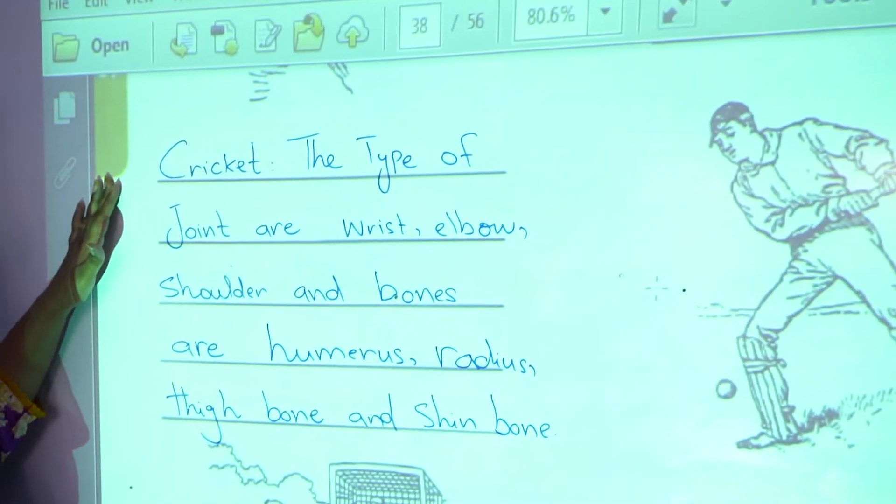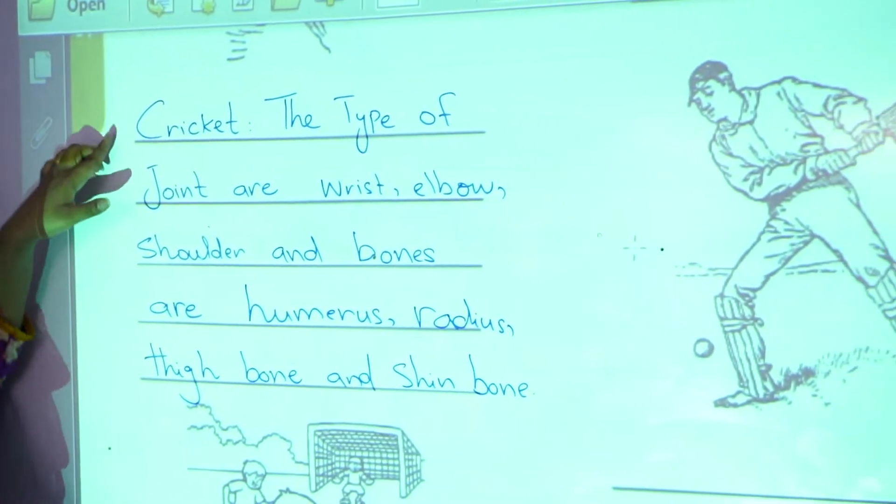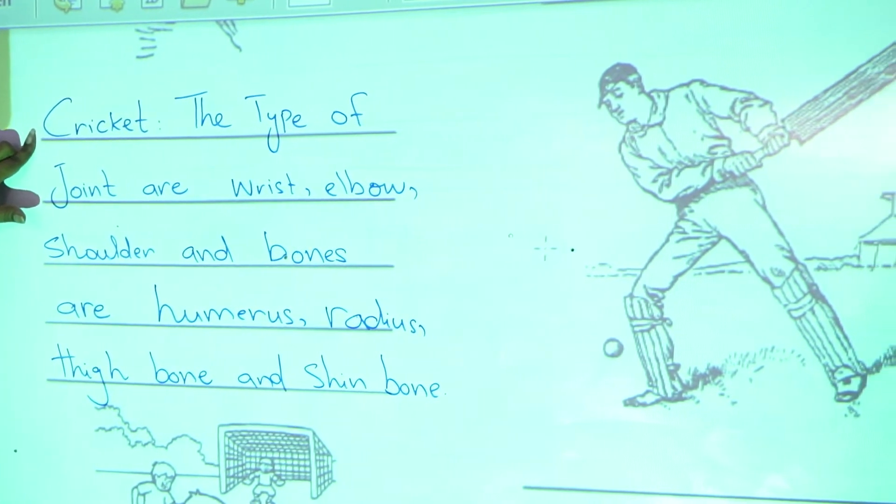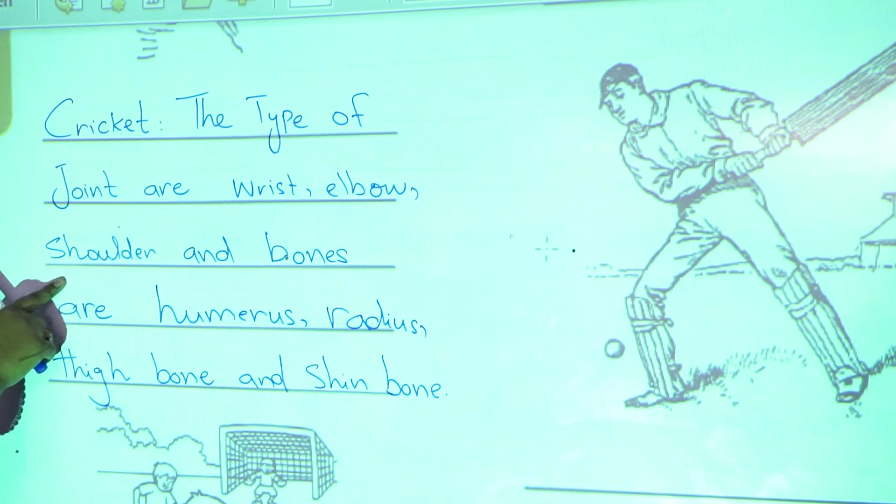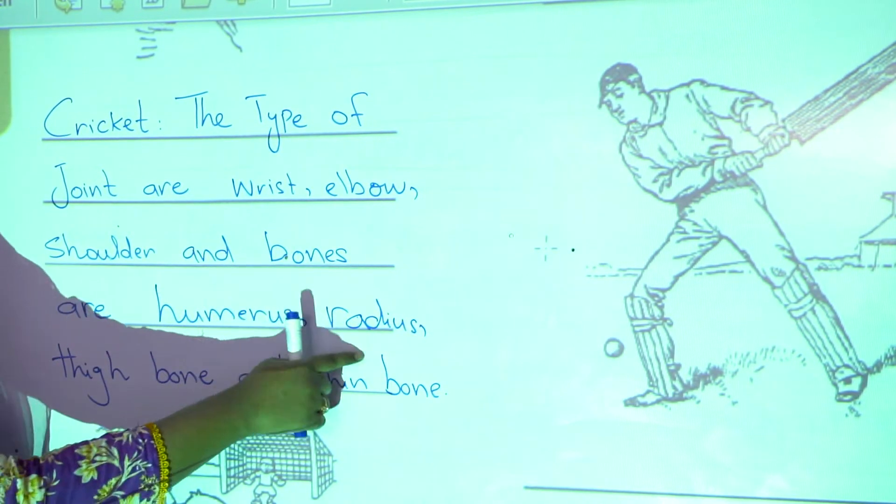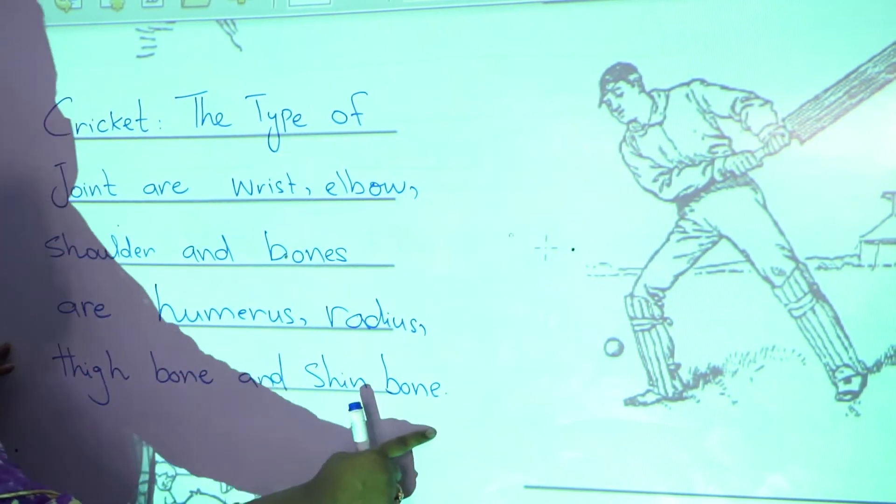What type of muscles and bones are using in this picture? This is a sport that is cricket. The type of joint are wrist, elbow, shoulder and bones are humerus, radius, thigh bone and shin bone.